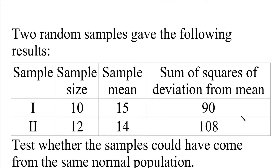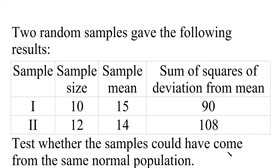Hi students. Let's look at an important MBA problem. Two random samples gave the following results: first sample size 10, second sample size 12, first sample mean 15, second sample mean 14, and sum of squares of deviation from first mean is 90 and from second mean is 108. Test whether the samples could have come from the same normal population.